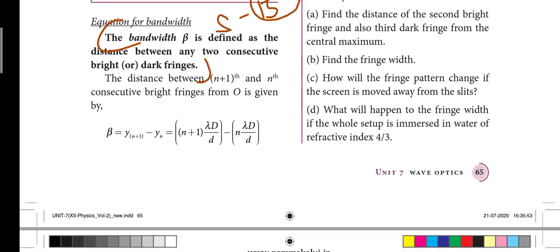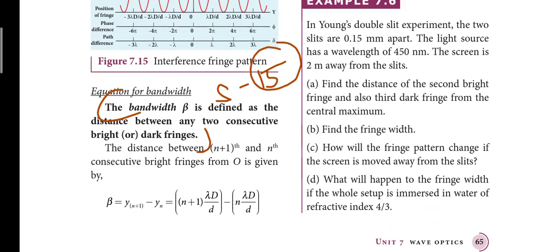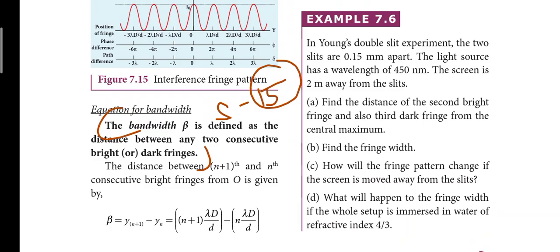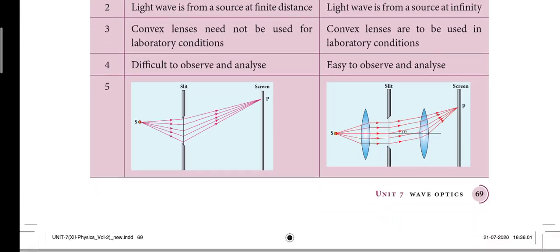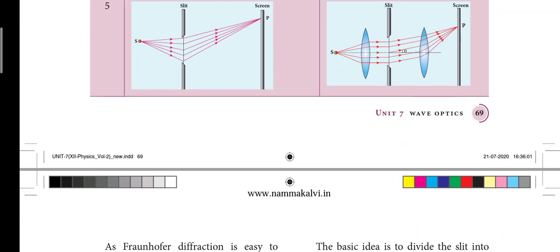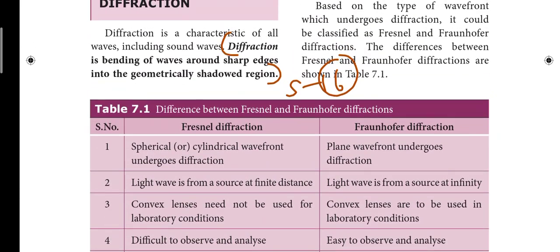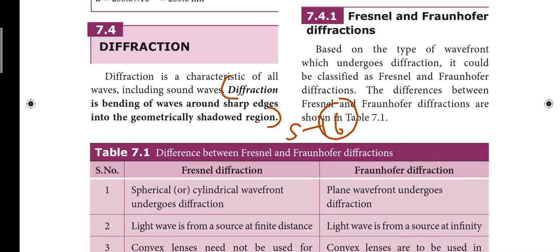Fifteenth short answer is on page number 65. On the third page, you have to write the bandwidth — you have to write the dark black colors. That is the fifteenth short answer. Next: sixteenth short answer — what is diffraction? It is on page number 69. On the third page, there are three black bold letters. That is the sixteenth short answer.